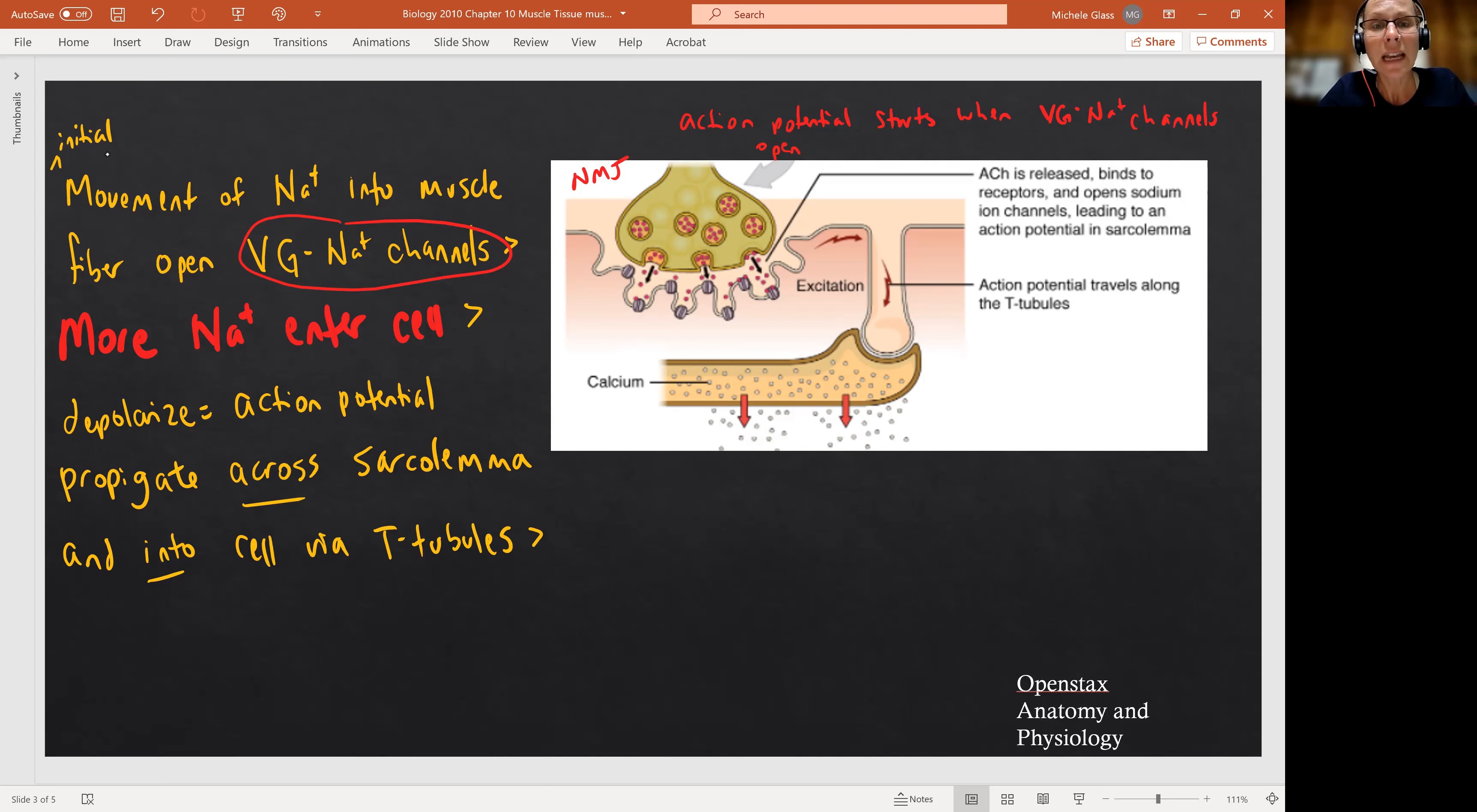Now that the skeletal muscle fiber has an action potential, we see it traveling on the outside of the cell on the sarcolemma. So that's what we're seeing right here. And then we have this dip down of that cell membrane. This is, remember, our T-tubule. And the T-tubule, remember, is going to wrap around the myofibril.